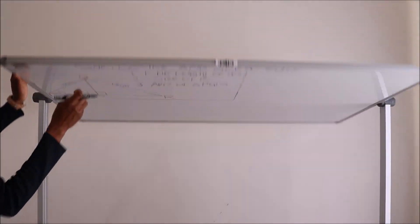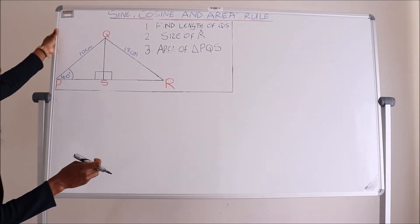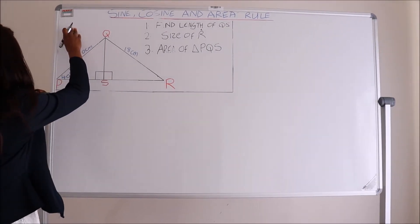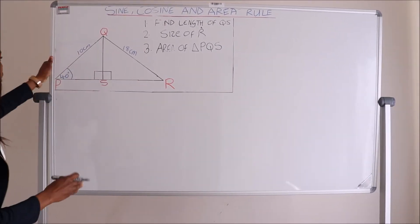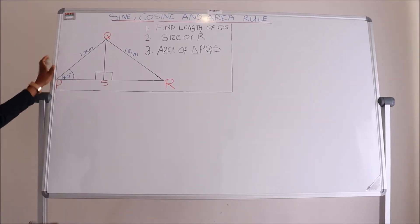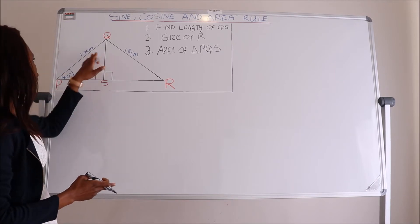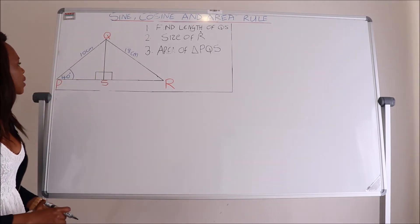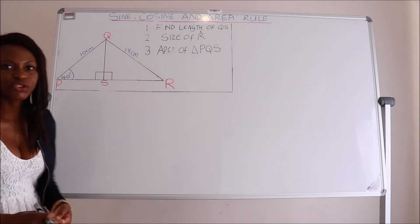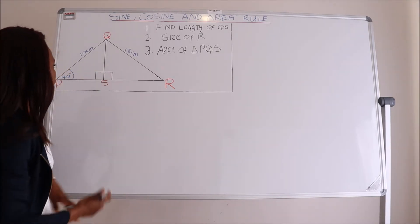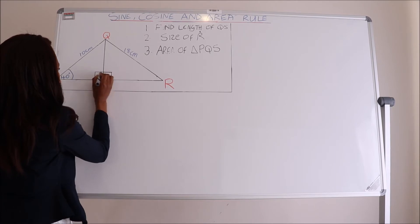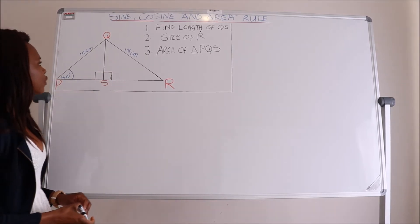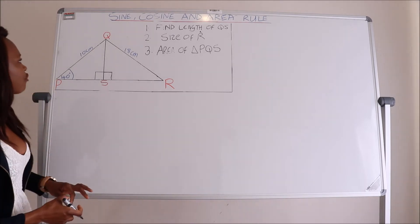The trigonometric ratios still apply even if you have a non-right angle triangle. Let's look at an example to see how we apply the theorem of Pythagoras and the trigonometric ratio when answering questions. We have a triangle PQR where PQ is 10 centimeters, QR is 18 centimeters, and these two are at right angles to each other. Our angle of P is equals to 40 degrees — we don't have Q and we don't have R.